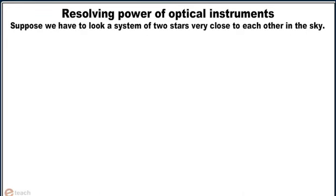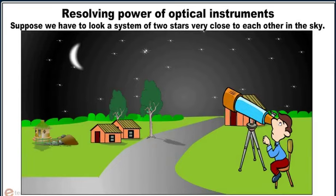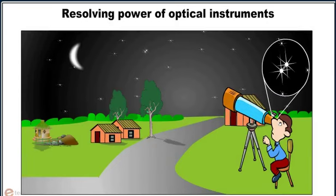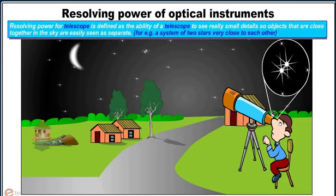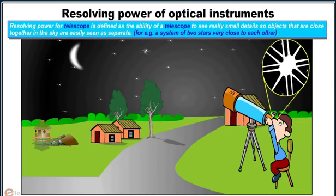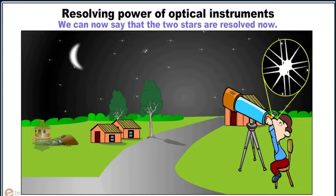Suppose we have to look at a system of two stars very close to each other in the sky. Resolving power for telescope is defined as the ability of a telescope to see really small details so that objects that are close together in the sky are easily seen as separated. For example, a system of two stars very close to each other. We can now say that the two stars are resolved.